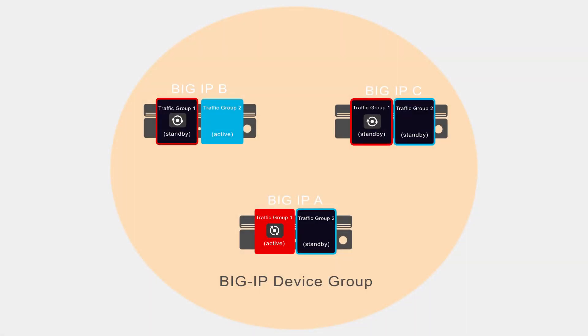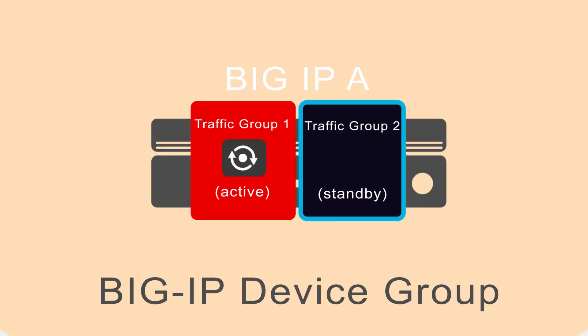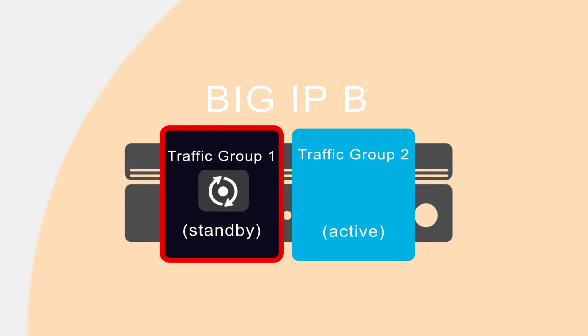For an example of using HA scores for picking the next active device, let's assume that we're using the HA groups feature for traffic group 1 only. We see here that for traffic group 1, the Big IP system has chosen Big IP B to be the next active device, because Big IP B's HA score of 90 indicates that an external resource that the traffic group needs is healthier at that moment than similar resources on Big IP C, which has a score of 75.